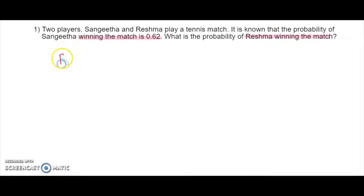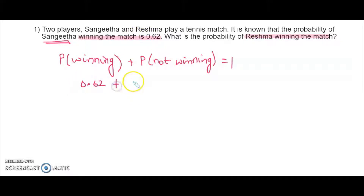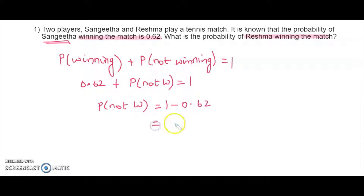The probability of winning and the probability of not winning, taken for Sangeeta, should add up to 1 because all possible probabilities always add up to 1. For Sangeeta, the probability of winning plus the probability of not winning equals 1. If she is not winning, then Reshma is winning. The probability of winning is given as 0.62, so the probability of not winning is 1 minus 0.62, which equals 0.38.